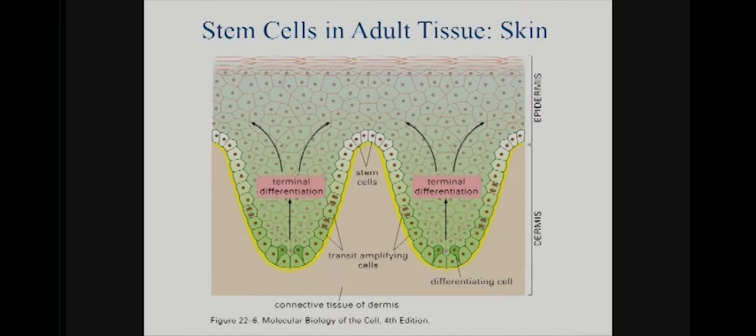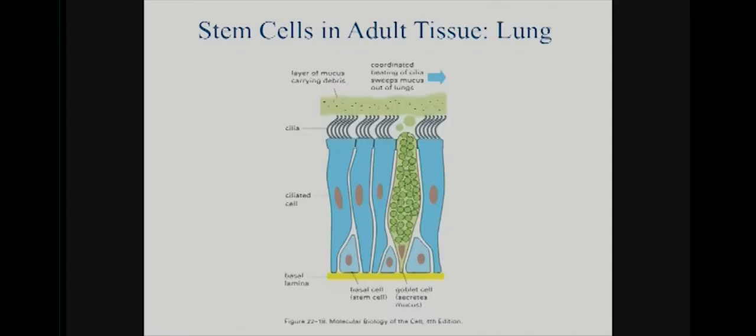The differentiation process and the transit amplifying cells go down to the trough; the differentiating cells are at the bottom and then they sort of fountain up over time. It's kind of an interesting design — it's not completely clear why you have the stem cells more protected. Different configurations are seen in different tissues.